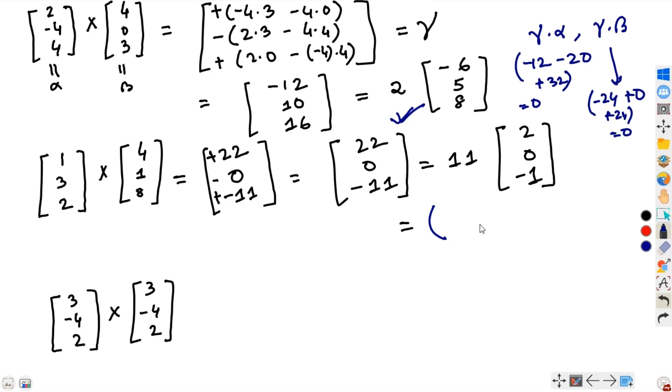Gamma dot alpha gives 2 times 1 is 2, 0 times 3 is 0, and minus 1 times 2. Gamma dot alpha is 0. Now, gamma dot beta: 2 times 4 is 8, 0 times 1 is 0, and minus 1 times 8 is minus 8. Gamma dot beta is also 0. Therefore, this is the correct answer.